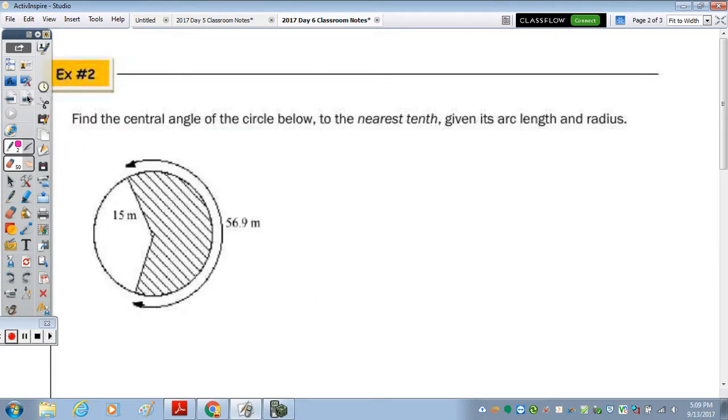Alright, number two. Find the central angle of the circle below to the nearest tenth, given the arc length and radius. So this arc length goes with this portion of the circle, so here would be in this angle theta. We have a radius of 15. So if I know the arc length, so I got 56.9 by doing theta over 360, because that was your fraction of the total circumference. So that would be times 2 pi times 15.